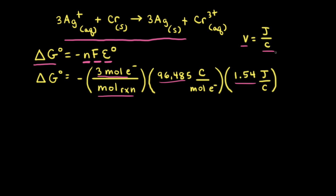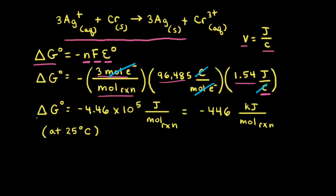One volt equals one joule per coulomb, so we convert volts to joules per coulomb. The moles of electrons and coulombs cancel out, leaving joules per mole of reaction. After doing the math, ΔG° at 25°C equals −4.46 × 10⁵ J/mol, or equivalently −446 kJ/mol.